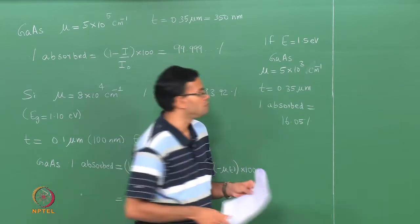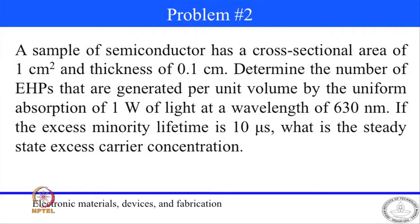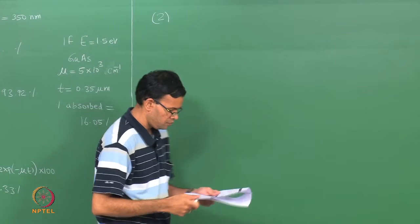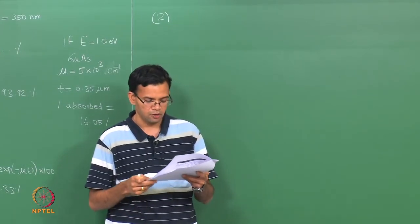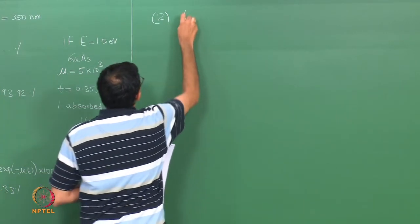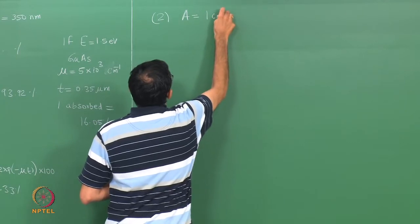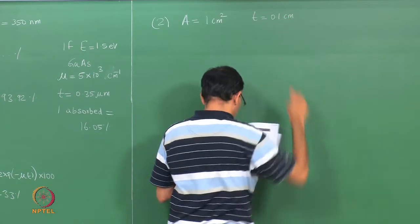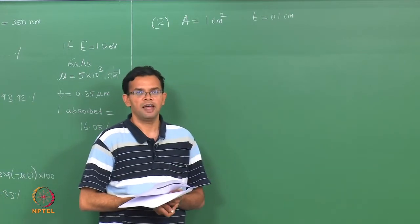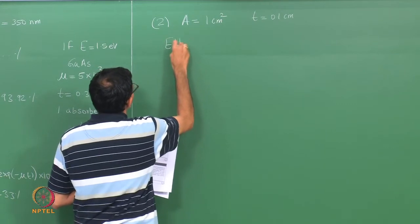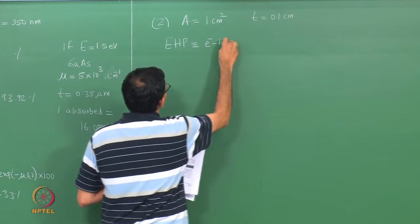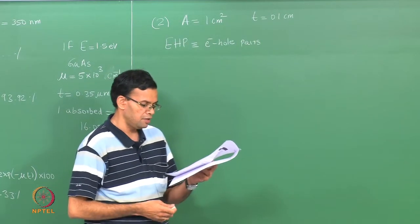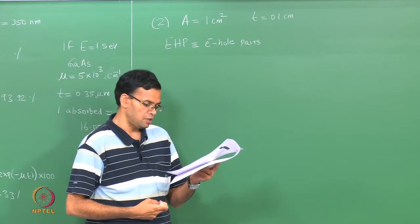Let us now go to Problem 2. We have a sample of a semiconductor with cross-sectional area A = 1 cm² and thickness = 0.1 cm. We want to find the number of electron-hole pairs (EHPs) that are generated per unit volume when you absorb light of 1 watt power and wavelength λ = 630 nanometers.